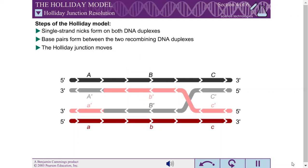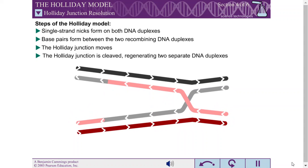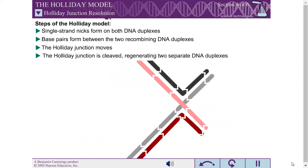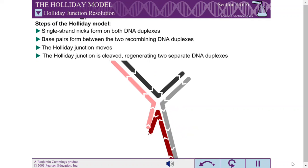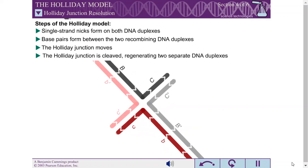The final step of DNA recombination is cleavage of the Holliday junction to regenerate two separate DNA duplexes. This process is called resolution. To aid in the visualization of this step, the Holliday junction is rotated to give a square planar structure with no crossing strands.